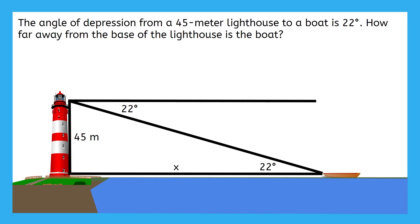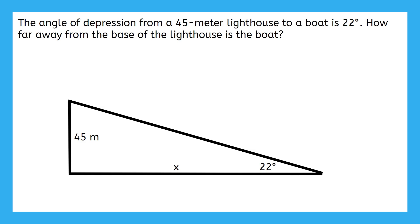They're congruent! So we can copy this 22 degree angle down here into the triangle. Then, if it helps, we can get rid of some of the extra details that we don't need anymore and just focus on the triangle we created. If you prefer your side labels to be outside of the triangle, that is fine too.